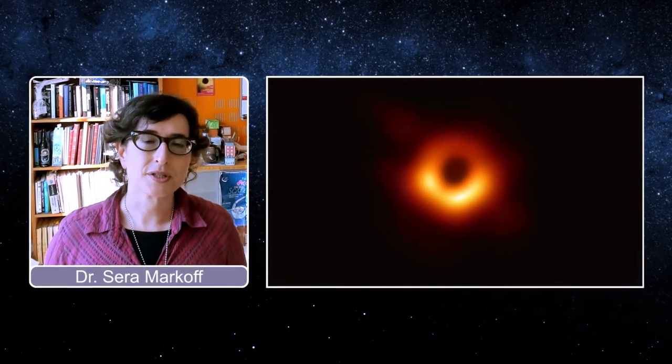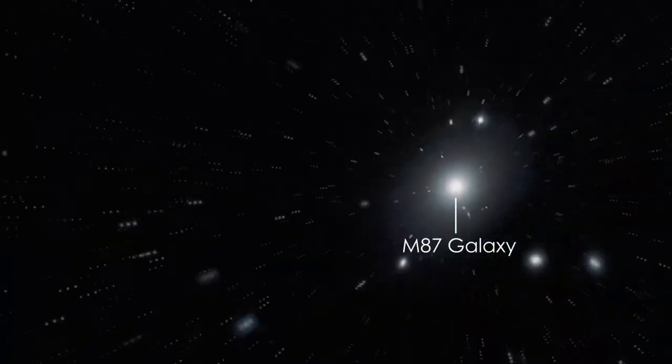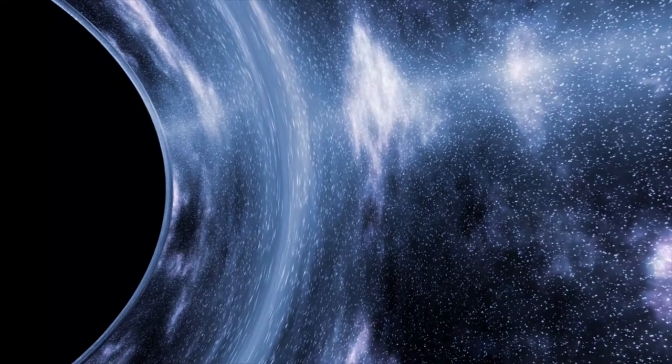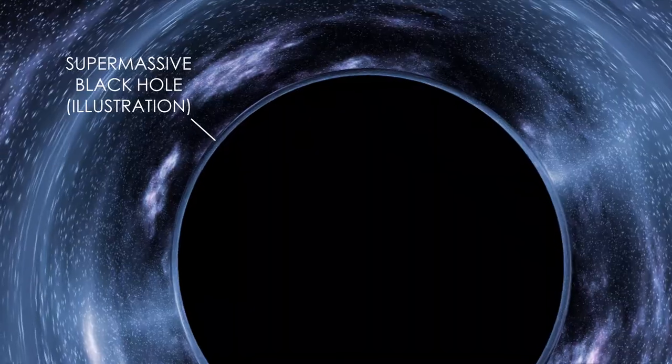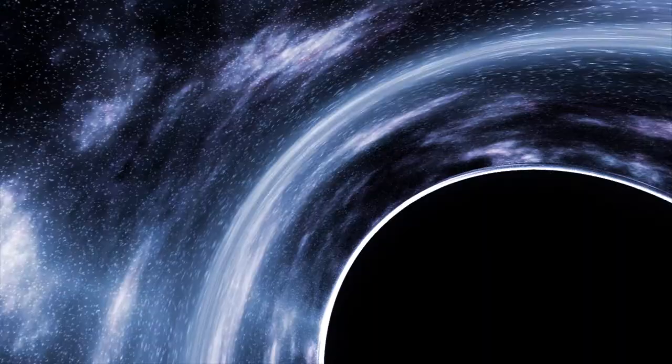So you're looking at the first ever groundbreaking image of the light just outside of the event horizon of the supermassive black hole in the M87 galaxy. A galaxy is a collection of billions to sometimes trillions of stars that all live together in the universe. At the center of almost every galaxy we've looked at, we found a supermassive black hole.